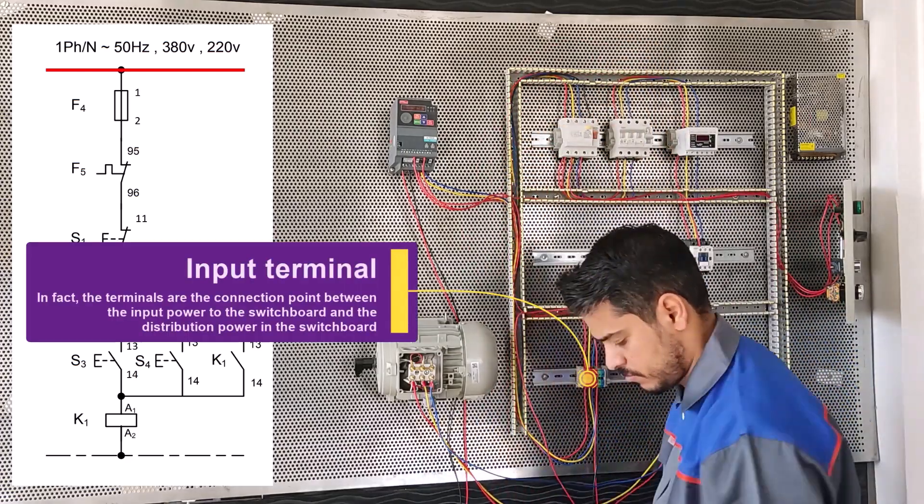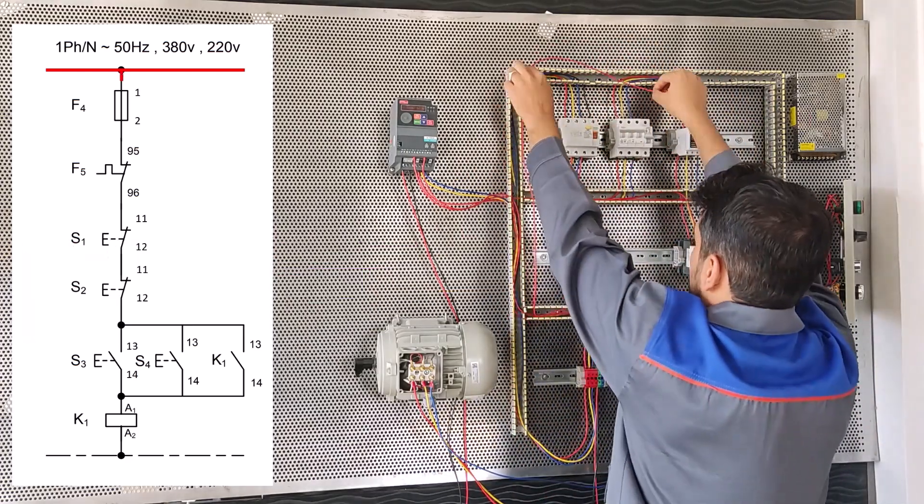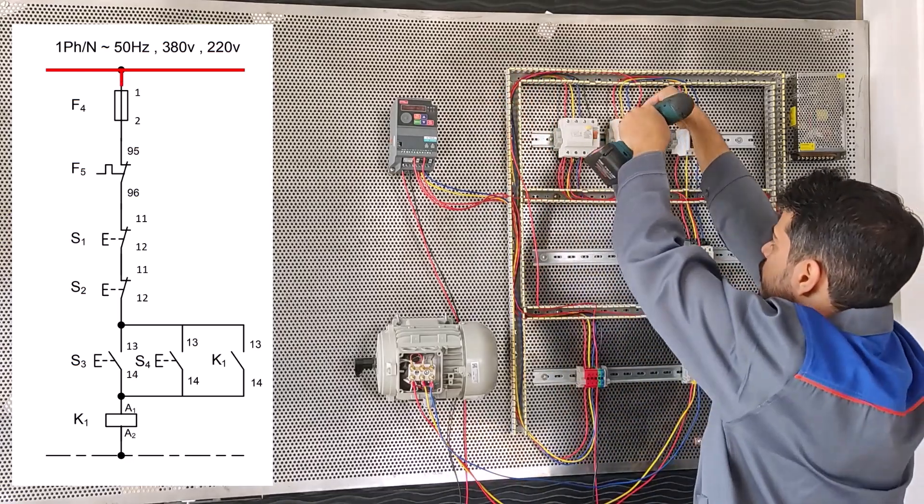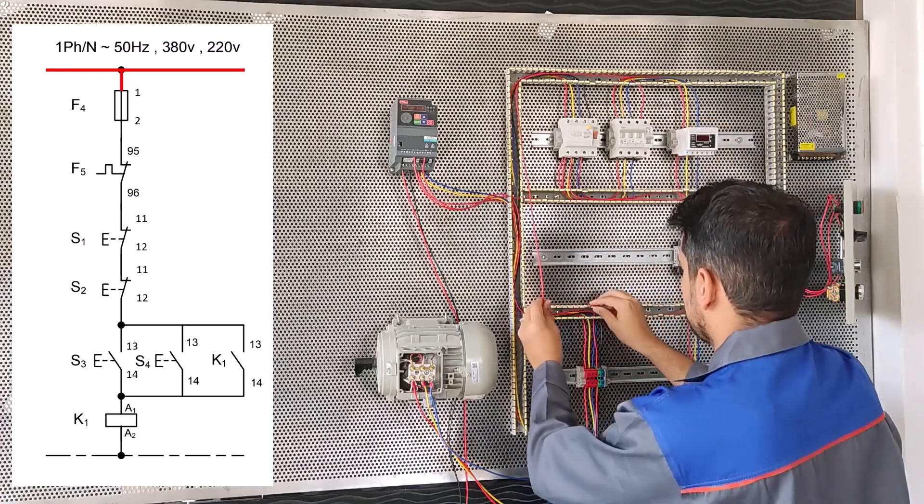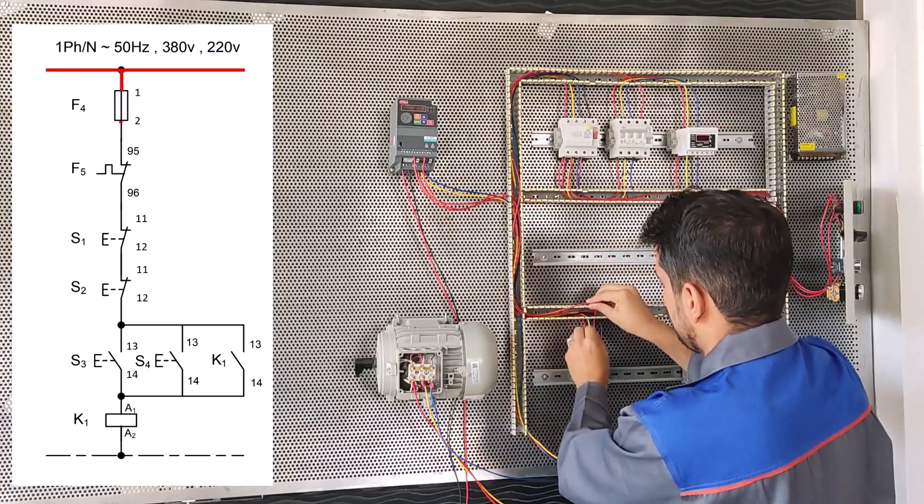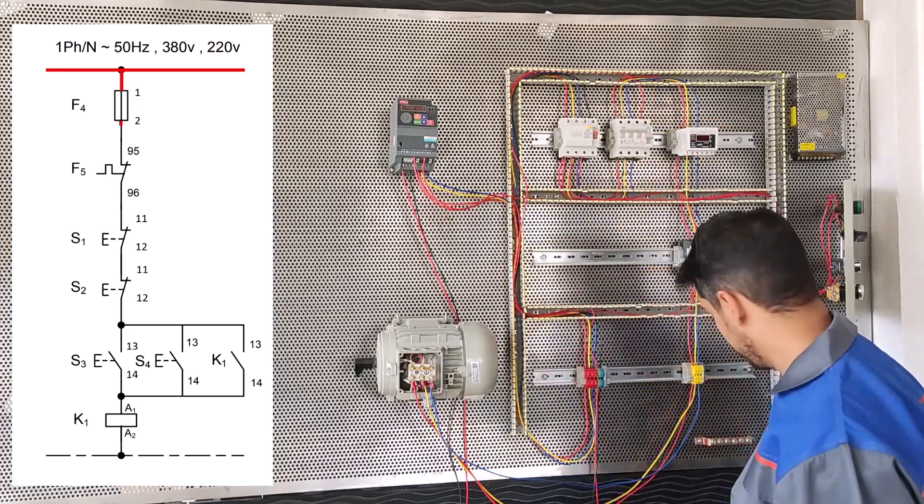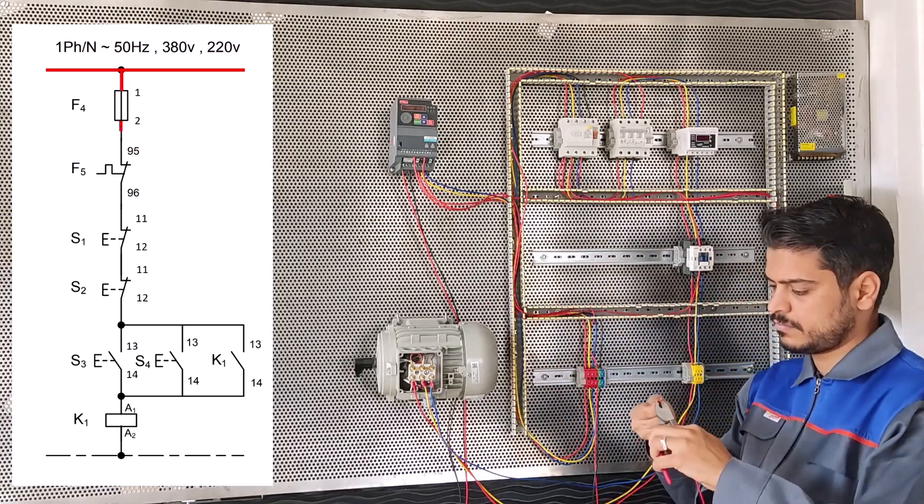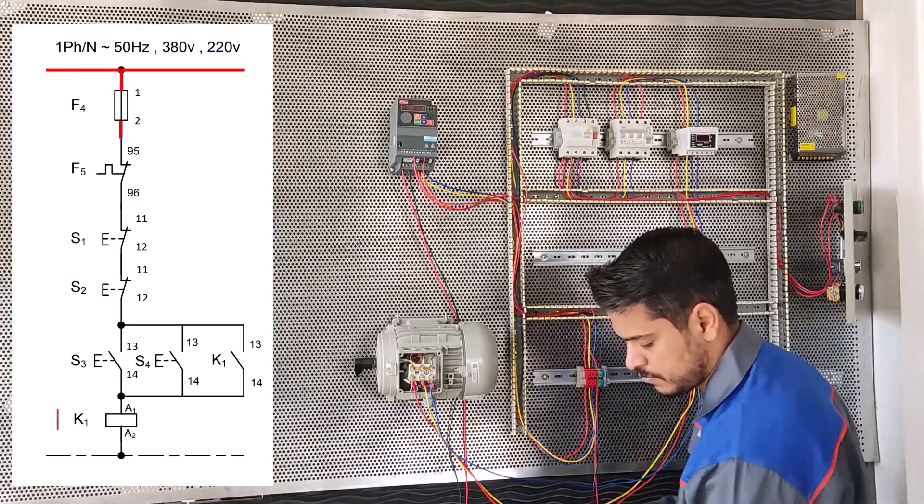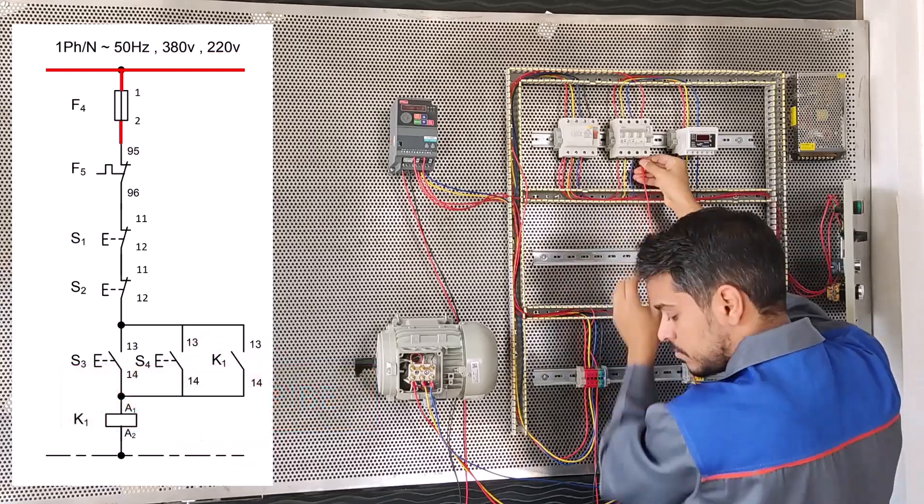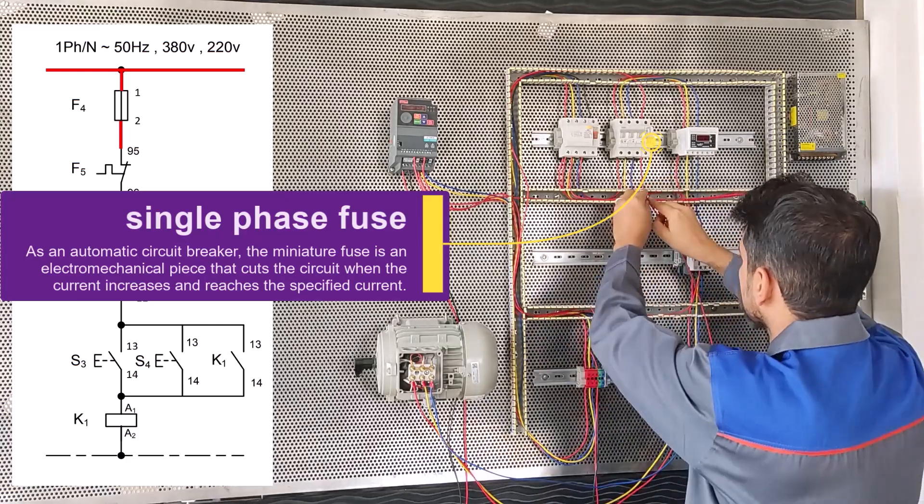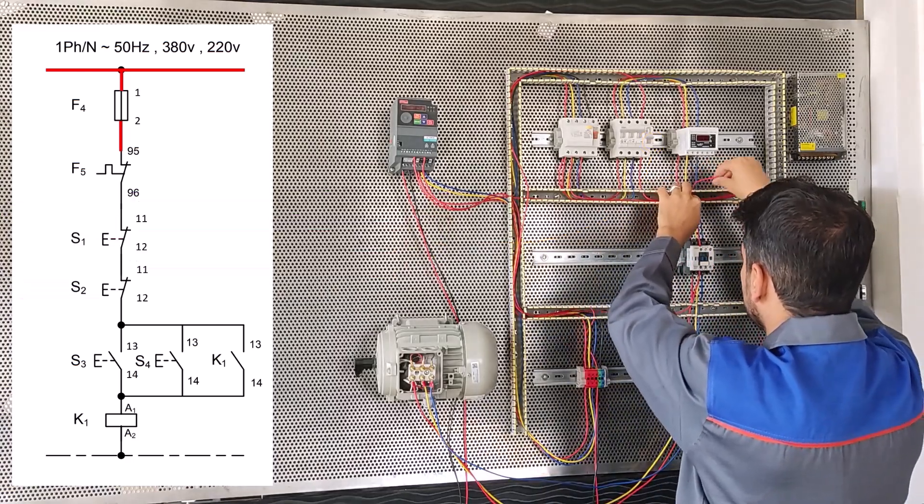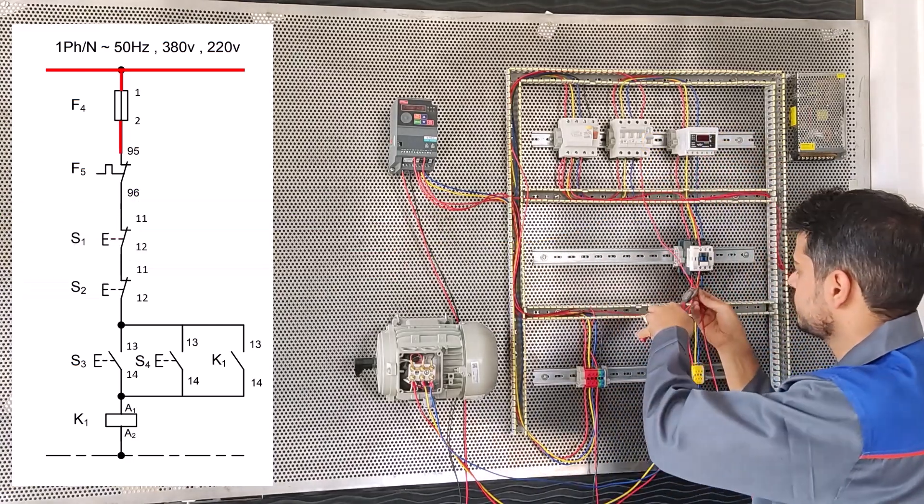In this video I want to explain about the power circuit. First, we connect a wire from the input terminal to the MCB. Now we connect a wire from the MCB to the load control cam.